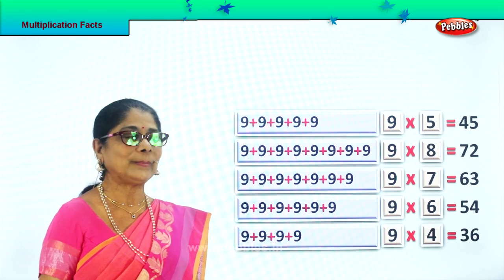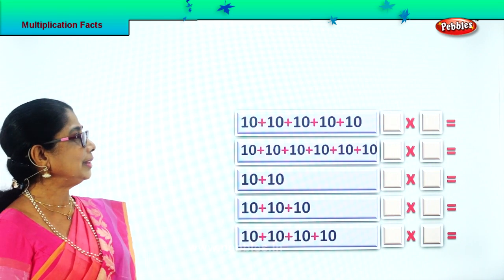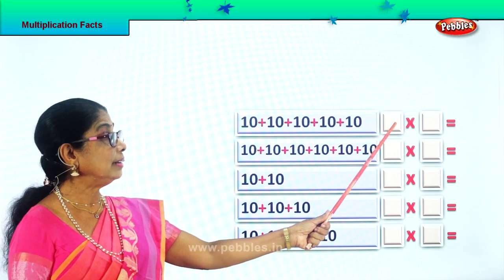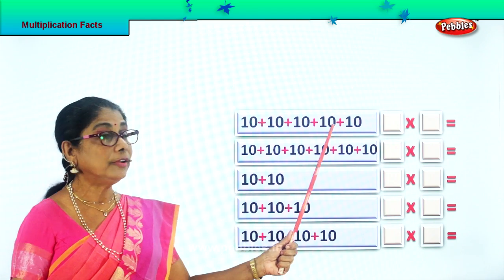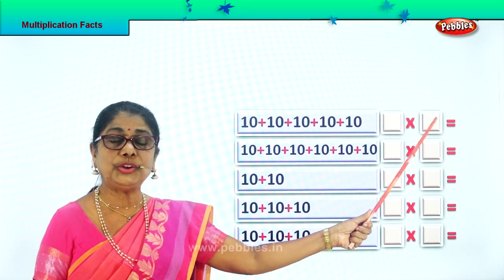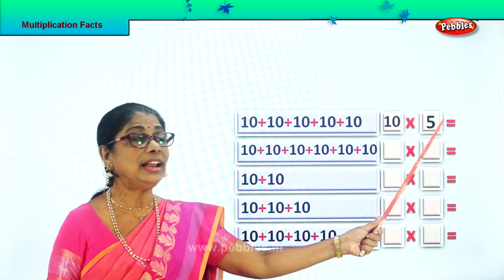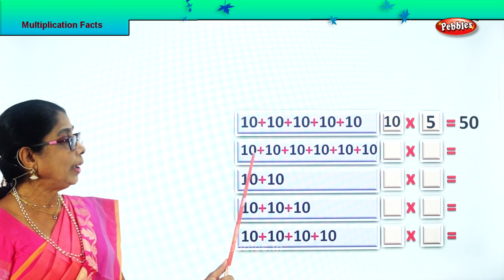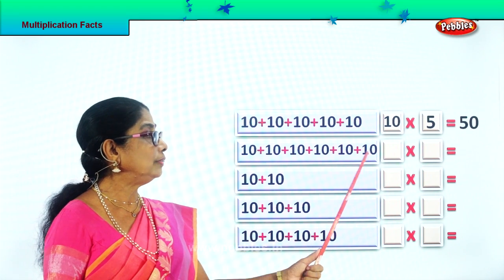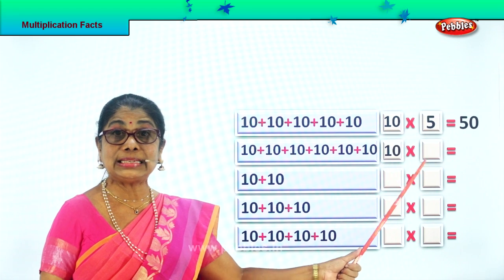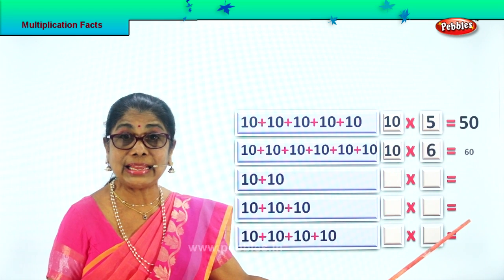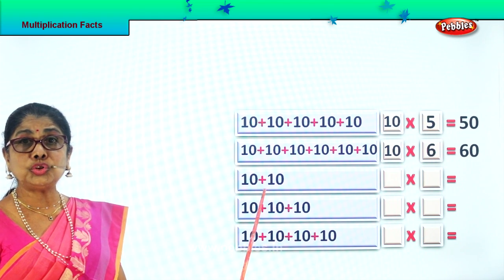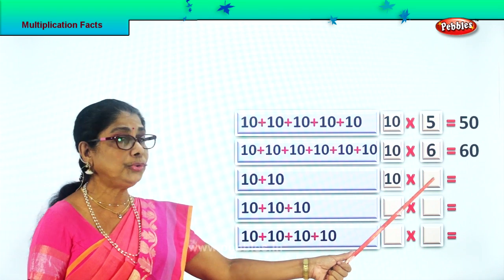Let's look at the multiplication facts. Ten. Ten how many times? Write ten here. How many times? 1, 2, 3, 4, 5 times. Ten into five. Ten fives are 50. So you write 50 over there. And here ten how many times? 1, 2, 3, 4, 5, 6. Ten six times. Ten sixes are 60. Good. Ten sixes are 60. Here ten how many times? Ten two times. Ten into two.